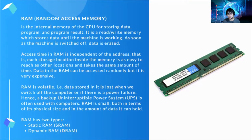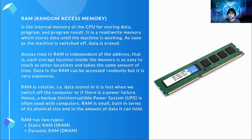Volatile means data stored in RAM is lost when we switch off the computer or if there is a power failure. Hence, a backup uninterruptible power system or UPS is often used with computers — so that during a brownout or power interruption, the computer does not automatically turn off. RAM is also small, both in terms of its physical size and in the amount of data it can hold. RAM has two types: static RAM and dynamic RAM.